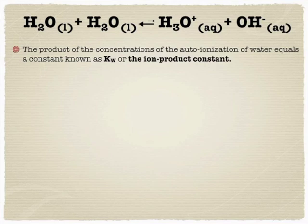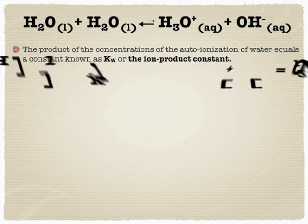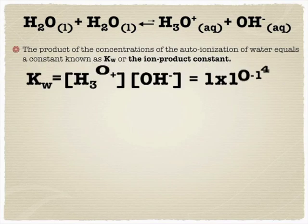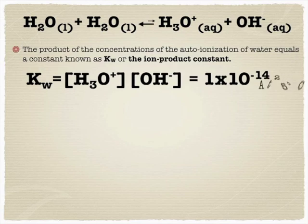If we take the concentrations together, if we take the concentration of hydronium and multiply it by the concentration of hydroxide, we get something called Kw. And this is the first of many K's that we are going to get to in these sets of lessons.